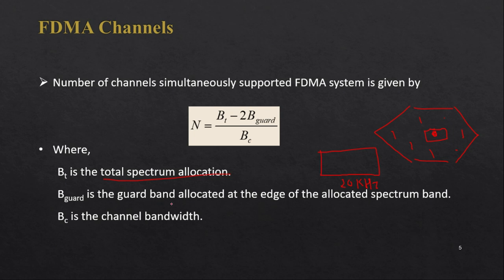The guard band is allocated at the edge of the spectrum — after one channel is assigned, a guard frequency gap is provided before allocating the next channel to avoid interference. B_c is the channel bandwidth for one particular channel. Using these values, we can calculate the total number of available channels N.